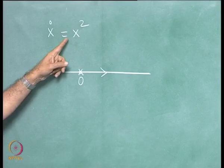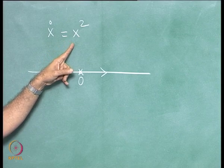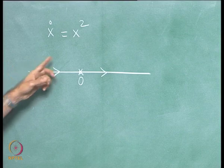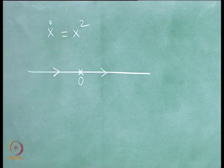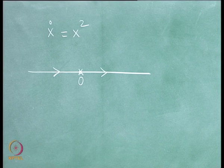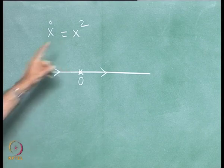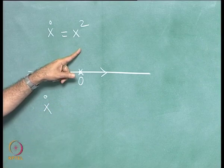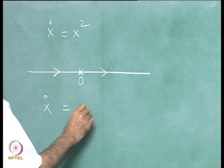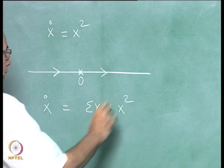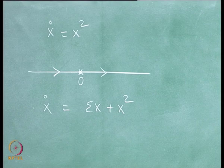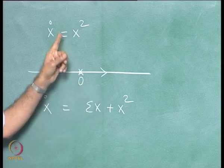The sensible approach is to unfold this second-order zero — this double zero — by writing x-dot equal to epsilon·x plus x-squared, and examine what happens for various values of epsilon: small positive, small negative, or zero. Epsilon equal to zero corresponds to the degenerate case, while epsilon positive or negative gives a generic system that can be linearized.